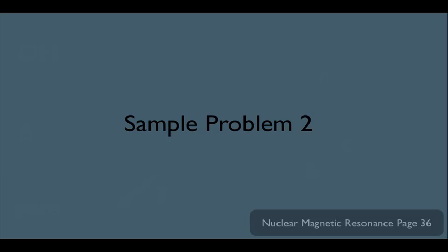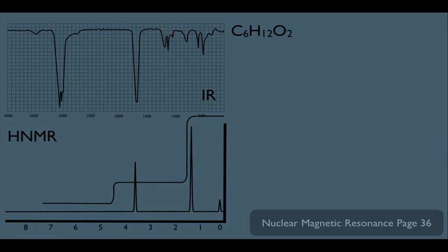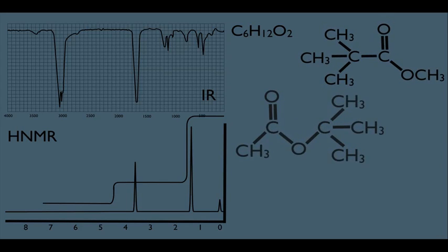Watch what happens in this example. The mass spec says C6H12O2 is the molecular formula. They give us the IR; they don't give us the CNMR, they just give us the HNMR. And these are the molecules that might be our unknown.